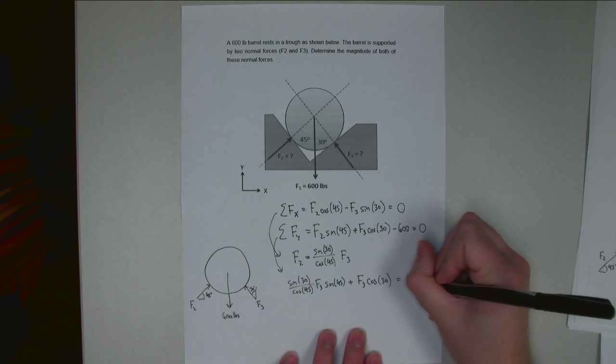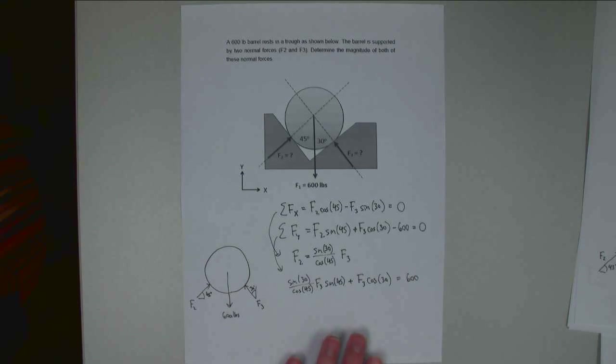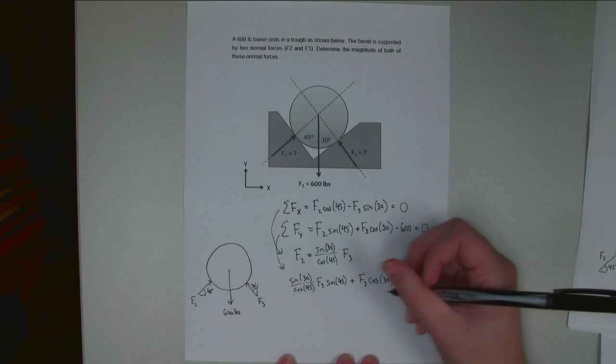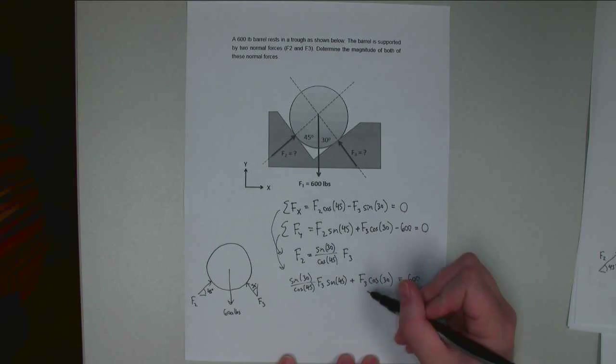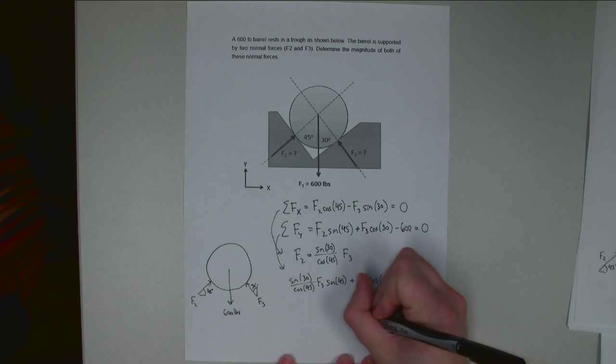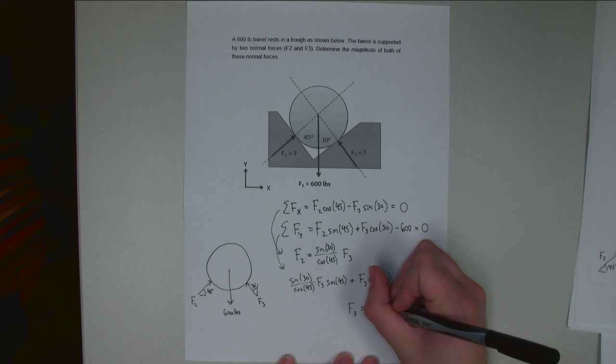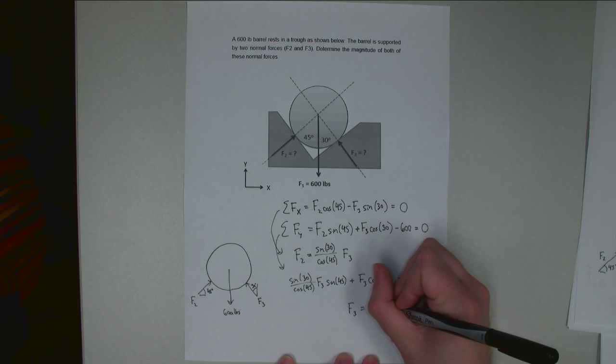Plus F3 times the cosine of 30, and that's going to be equal to 600. Move the 600 over to the other side. Alright, so this whole thing, if I can move the F3 out and I just have all of these sines and cosines left together, if I solve this equation for F3, I should end up with F3 being equal to 439.2, and the units are going to be pounds.